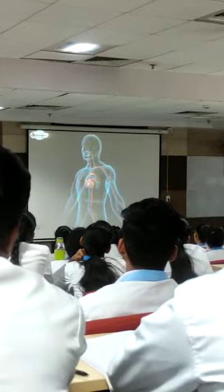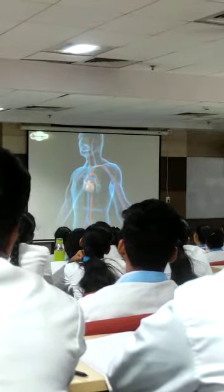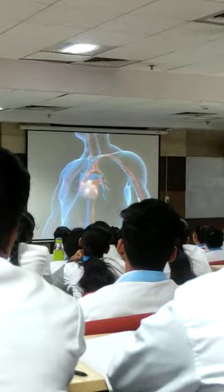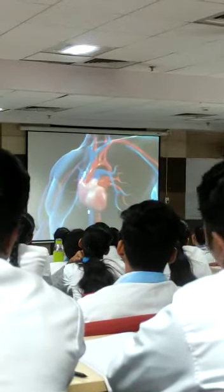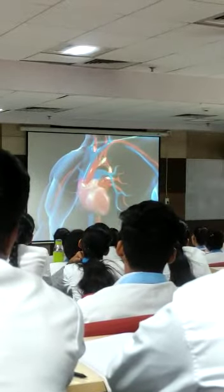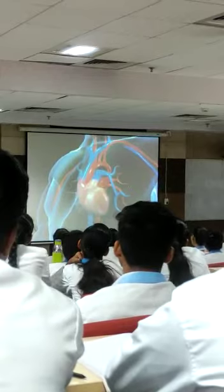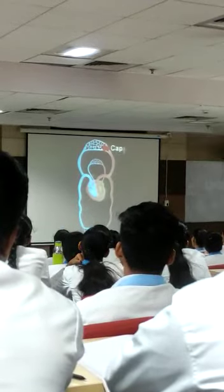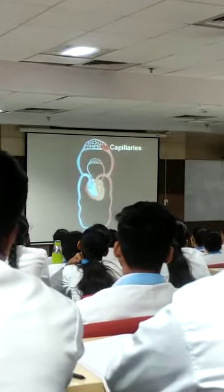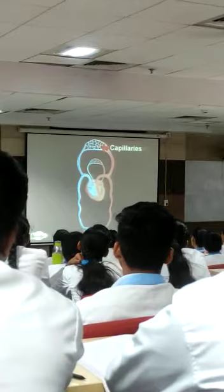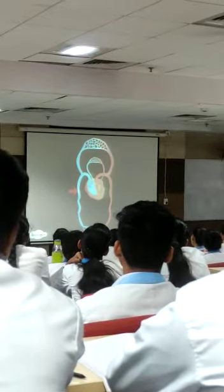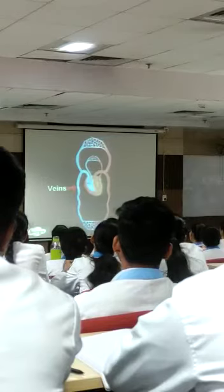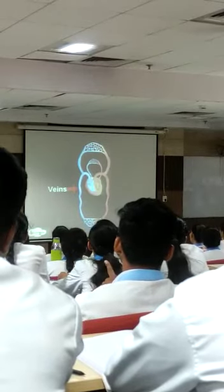Arteries get divided into very narrow blood capillaries where exchange of substances to veins occurs. Capillaries form a web-like network to reach maximum cells, and capillaries join together to form veins.